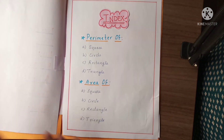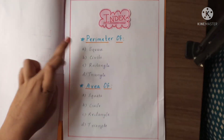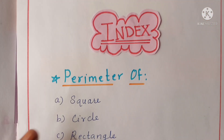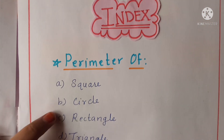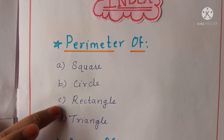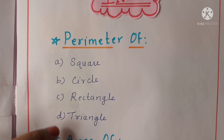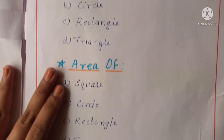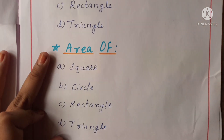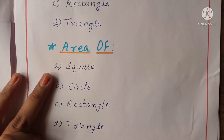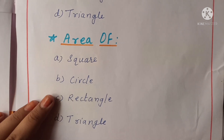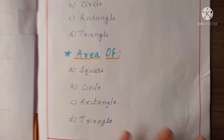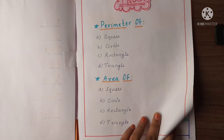Here is the index. Perimeter of square, circle, rectangle and triangle. Area of square, circle, rectangle and triangle. Let's see the next.